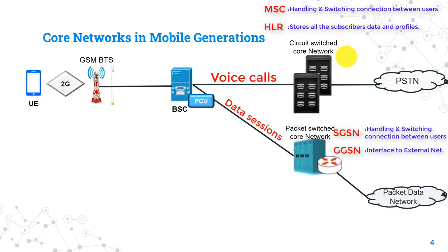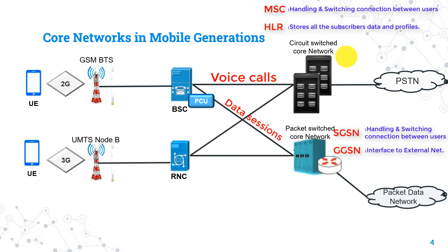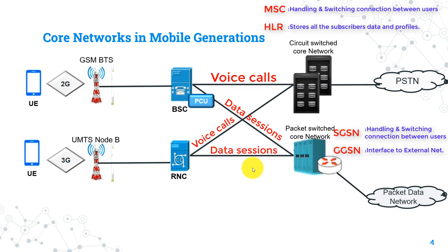Now let's talk about the 3G mobile networks. The core in 3G is the same core as in 2G networks — no differences between them. Circuit switching is also used for voice calls and packet switching is also used for data sessions, exactly the same core as in 2G.